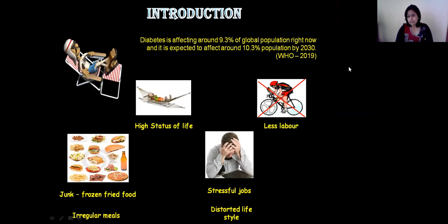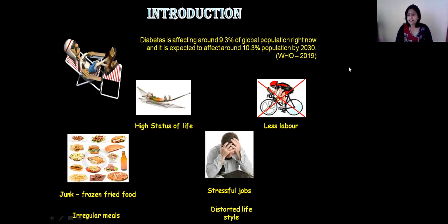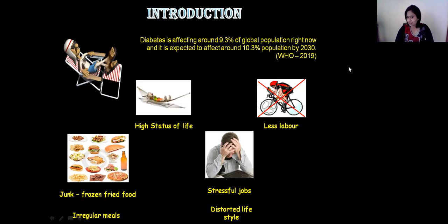Diabetes was once upon a time believed to be a disease of opulence, but the situation has completely changed nowadays. This disease has lost its monopoly and has started affecting a large population of the world. Diabetes is affecting around 9.3% of the global population right now and is expected to affect around 10.3% of the population by 2030.